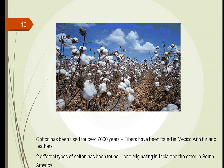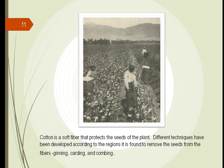One of the first plants used for clothing has been cotton. Archaeologically, we have found cotton fibers in Mexico from at least 7,000 years ago. It seems two different types of cotton have been found — one that originated in India and the other in South America. Cotton bolls are masses about half the size of your fist, filled with fibers as well as hundreds of seeds. Cotton required a large number of people just to get the seeds out of the fibers.